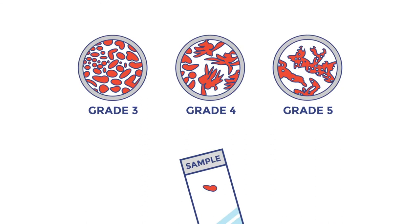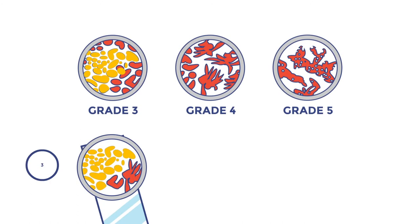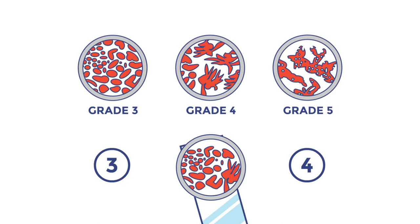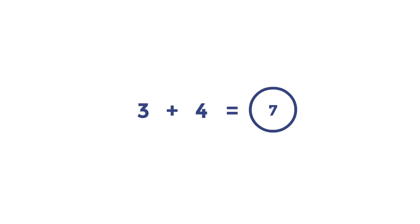The most common type of cancer cells are allocated a score between 3 and 5. This is then repeated for the second most common type of cancer cells, giving 2 scores which are then added together to give a final score out of 10.